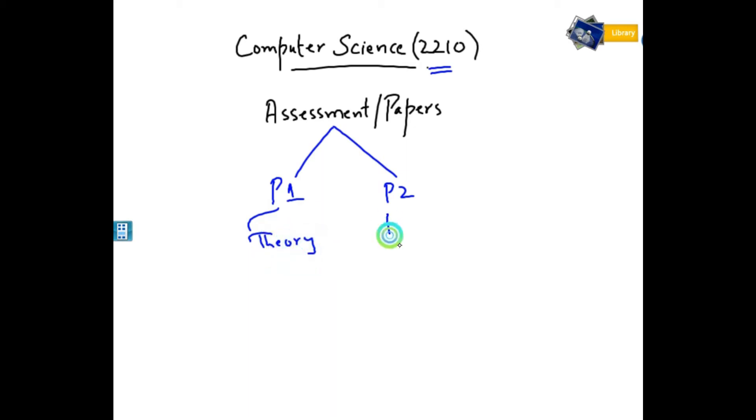In computer science 2210, this is the code. Paper one is theory and paper two is problem solving and programming.